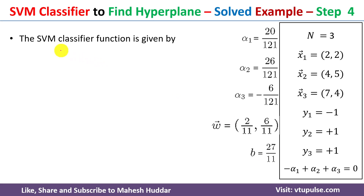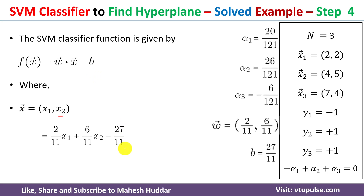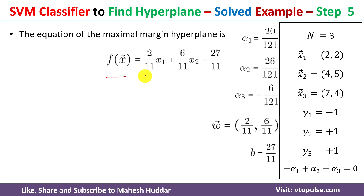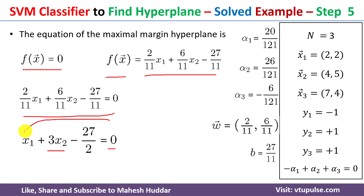The SVM classifier function is f(x) = w·x − b, where x = (x1, x2). Substituting: f(x) = (2/11)x1 + (6/11)x2 − 27/11. To find the maximal margin hyperplane, we set f(x) = 0, giving the final hyperplane equation: (2/11)x1 + (6/11)x2 − 27/11 = 0.